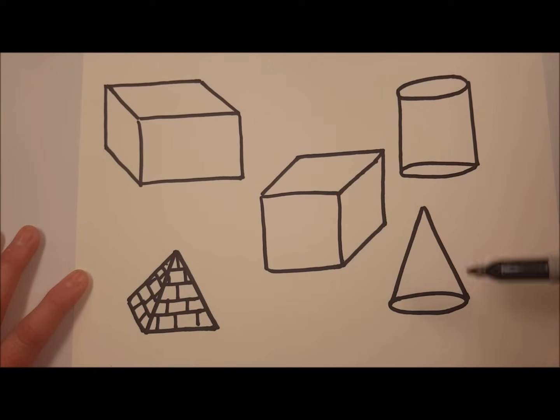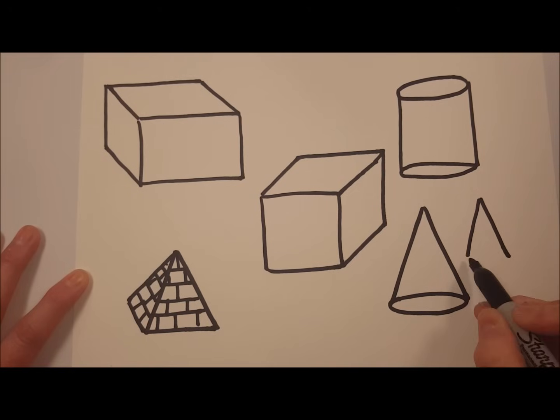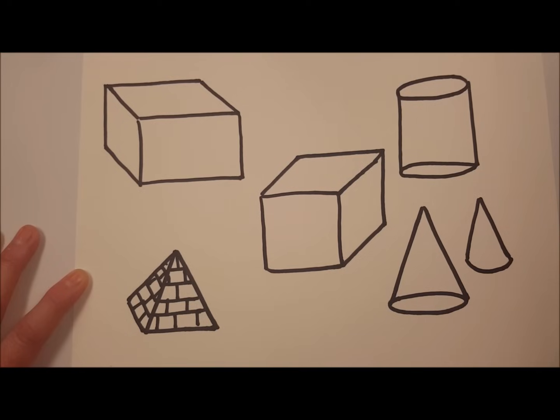Now the cylinder and the cone are transparent because you can see the entire shape. If you were to draw it solid, not transparent, you would do the triangle and just a curve at the bottom.